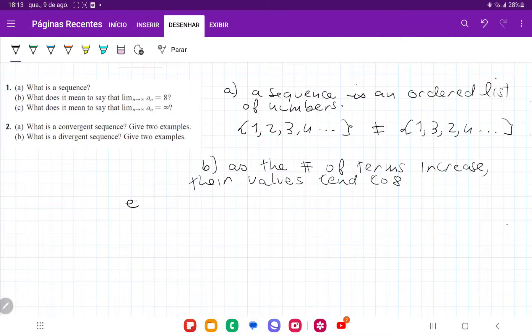So an example of this would be the sequence 7.9, 7.99, 7.999, and so on. We can see that the more terms that we add, clearly the values are getting closer and closer to 8.